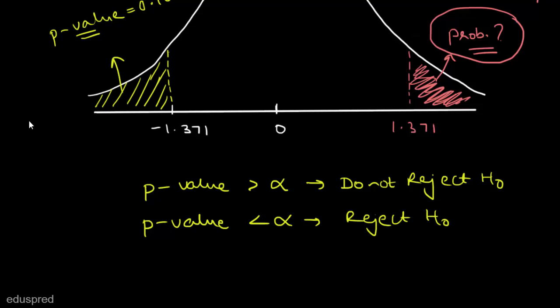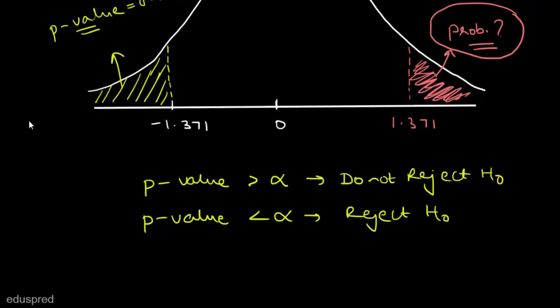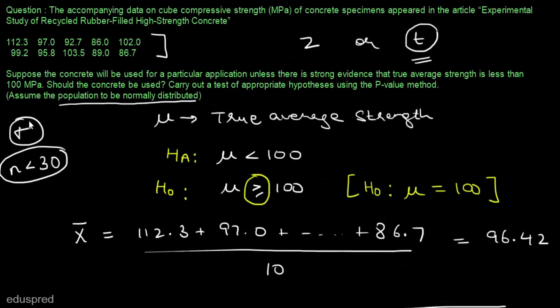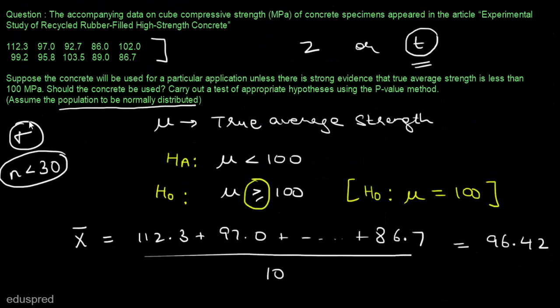The twist is that we are not given the value of alpha in the question. Looking at the question again, the concrete will be used unless there is strong evidence that the true average strength is less than 100 MPa. So we need very strong evidence, and no particular value of alpha is specified.